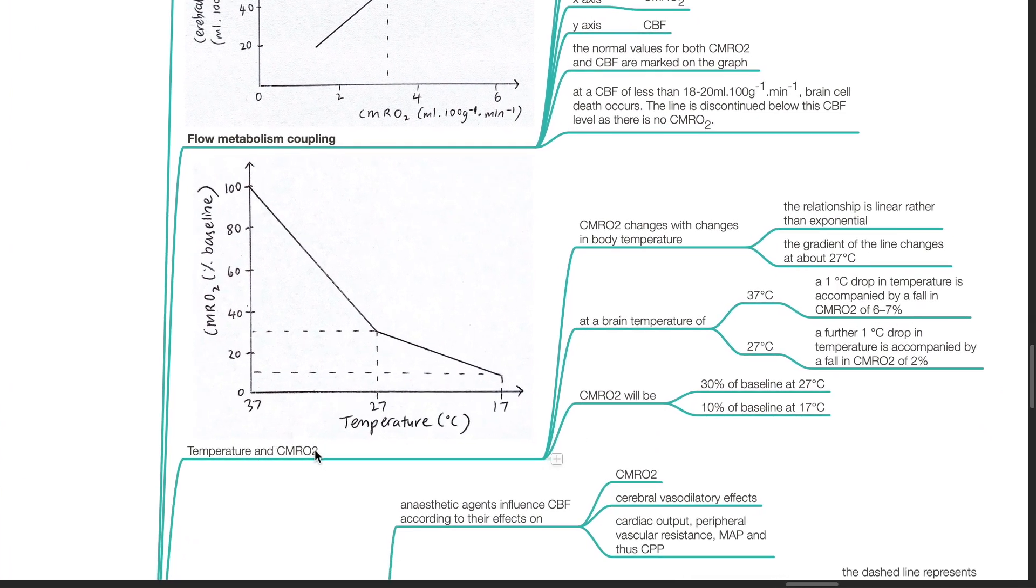Temperature and CMRO2. CMRO2 changes with changes in body temperature. The relationship is linear rather than exponential. The gradient of the line changes at about 27 degrees Celsius.